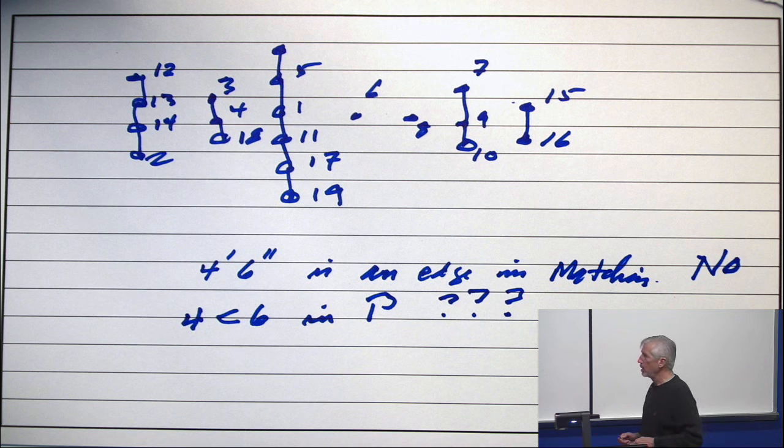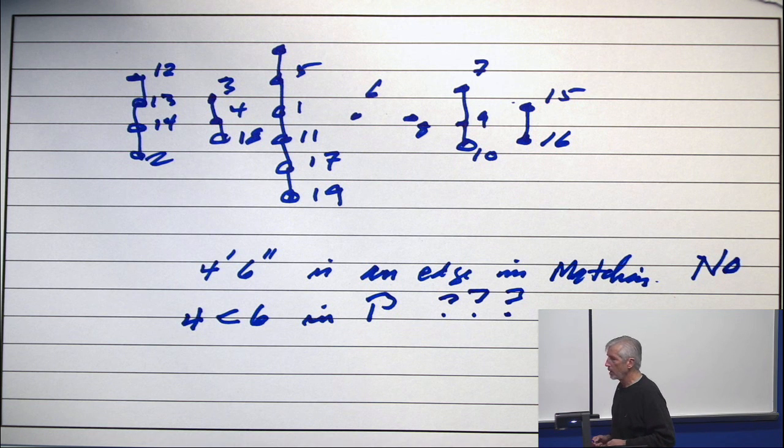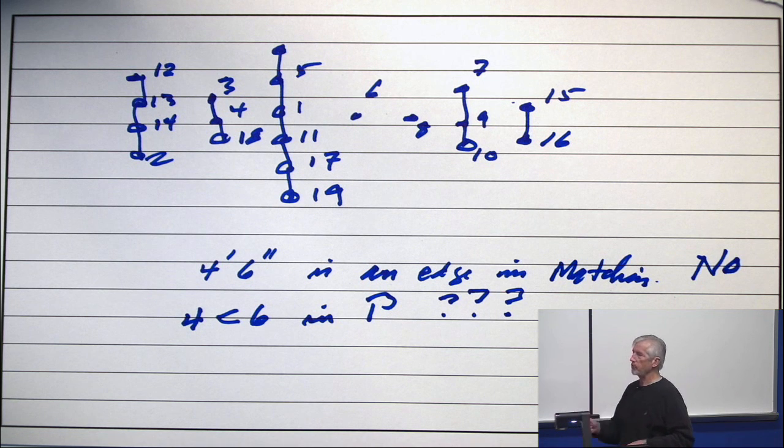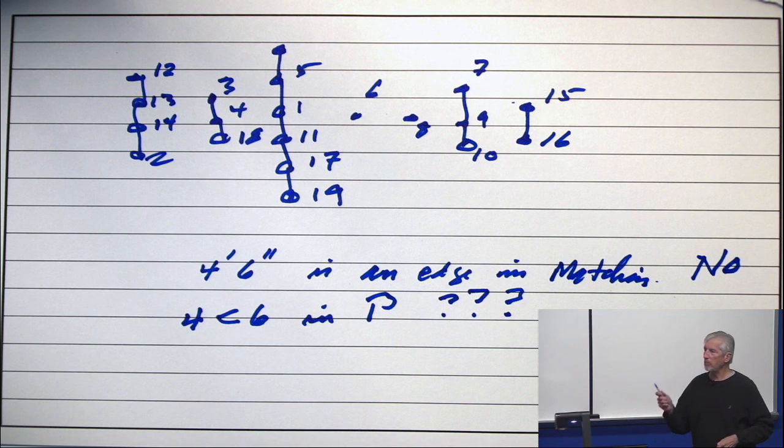Yes? I thought that the, shouldn't the answer be no because 4 and 6 aren't connected? Because when you constructed the chain partitions, 4 and 6 aren't connected? I don't know whether they're connected or not. They're not part of the matching. They're not part of the maximum matching.